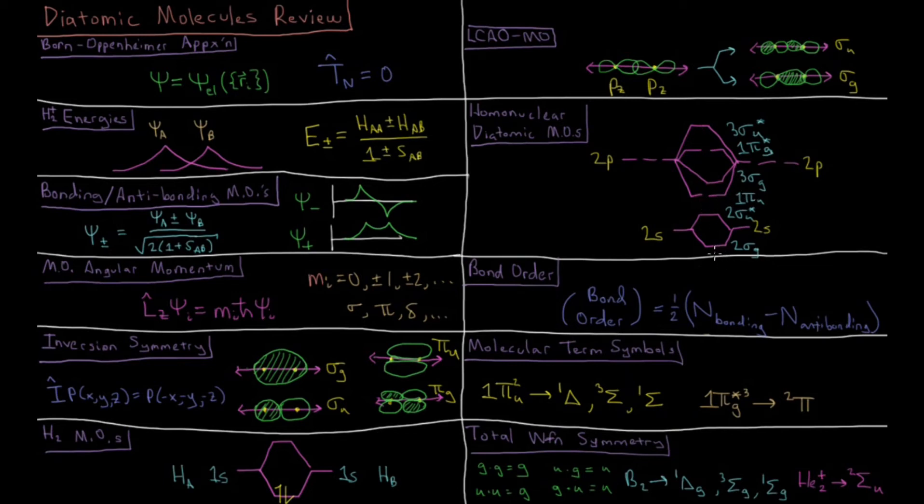So we just fill up using the Aufbau principle and also Hund's rule about how we fill up orbital diagrams and just however many electrons that an individual diatomic has, that's how we would fill up this diagram here. So if we had 10 electrons we'd just say 1, 2, 3, 4, 5, 6, 7, 8, 9, 10, and we would fill it up like that.